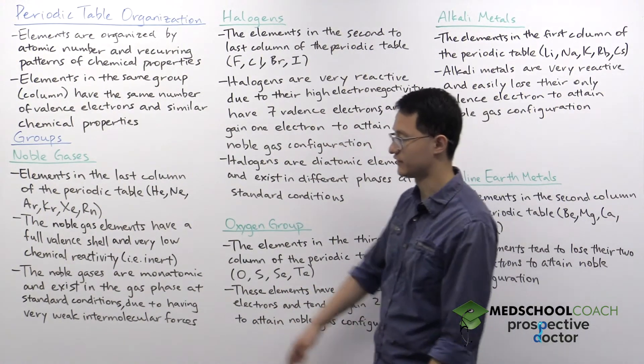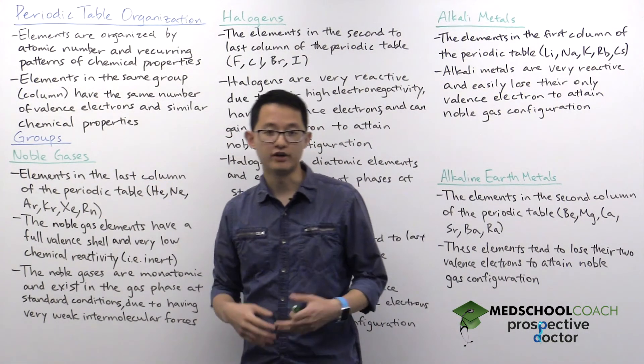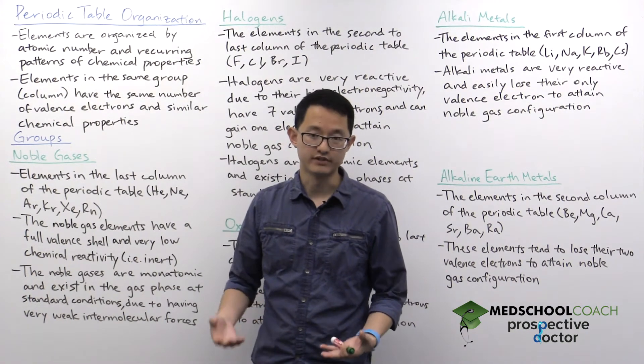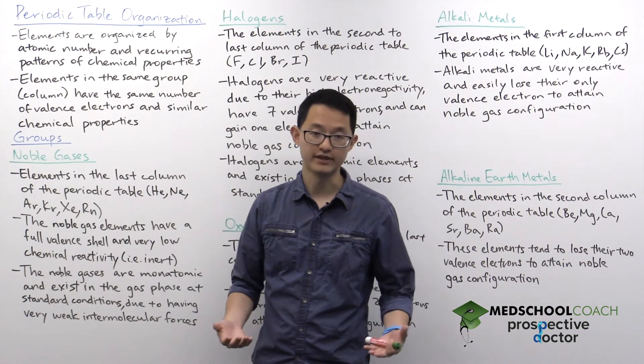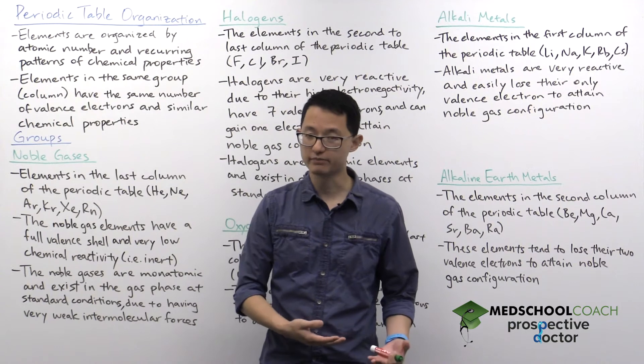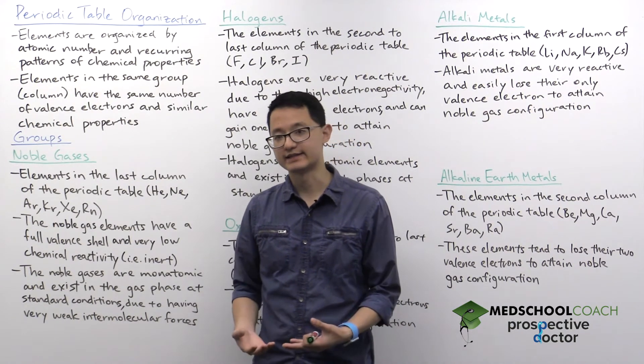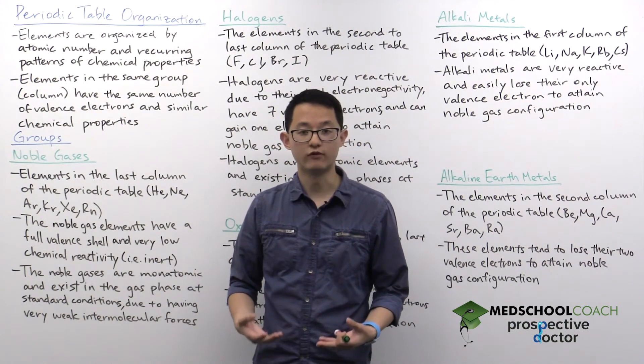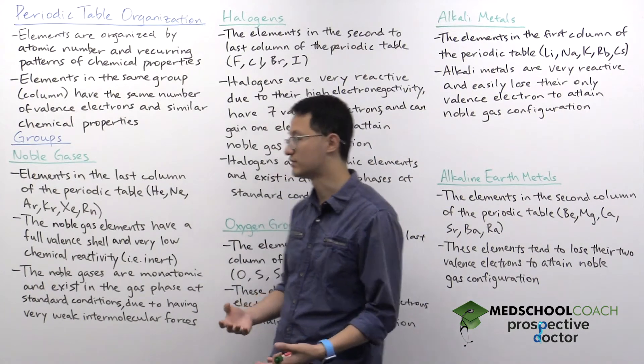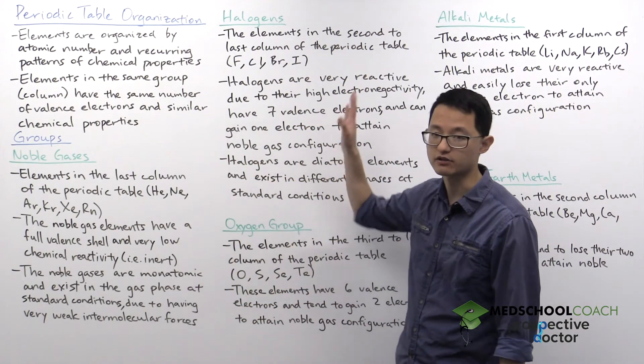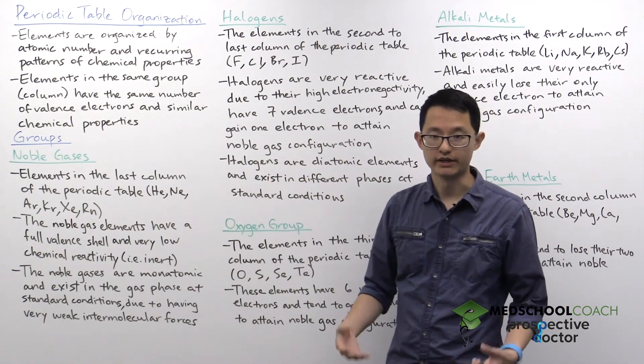So now let's look at the different groups in more detail. One note about this, there are a whole bunch of different groups on the periodic table, basically one group per column on the periodic table. The good thing is that you don't need to know all of them for the MCAT. The only ones you need to know are the ones that I've included on this whiteboard right here.